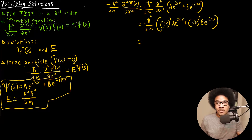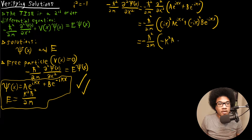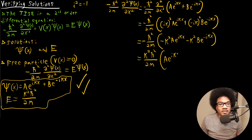From there, we make use of the identity for imaginary numbers: i² = -1. Using that, we can simplify the expression to: negative h-bar squared over 2m times (negative k²·A·e^(ikx) minus k²·B·e^(-ikx)). We can then factor out k², giving us: k²·h-bar²/(2m) times (A·e^(ikx) + B·e^(-ikx)), where after factoring the sign becomes positive.